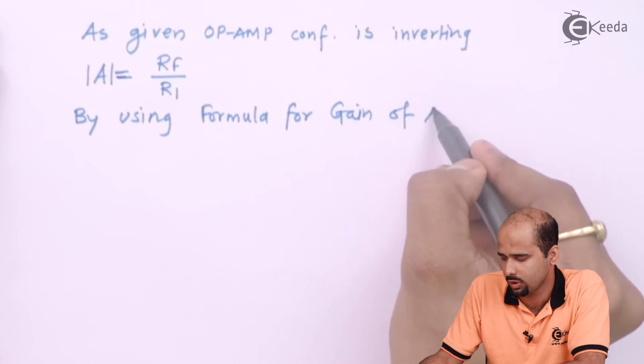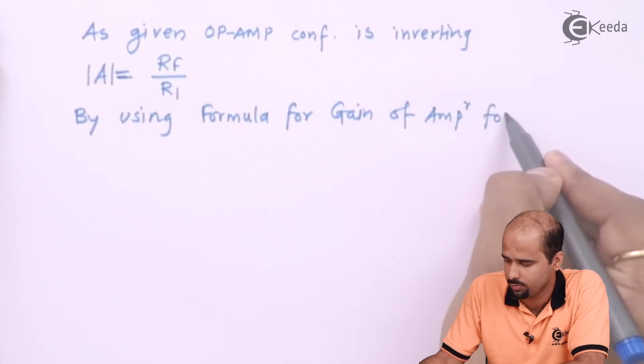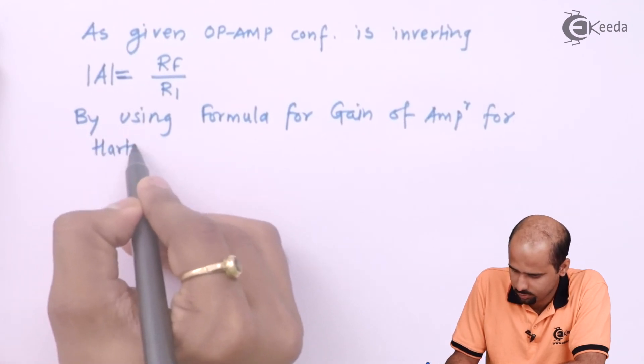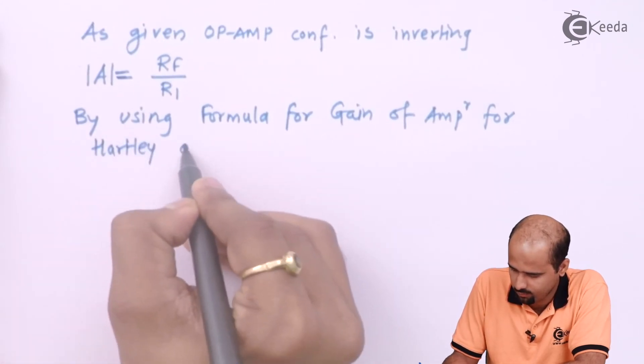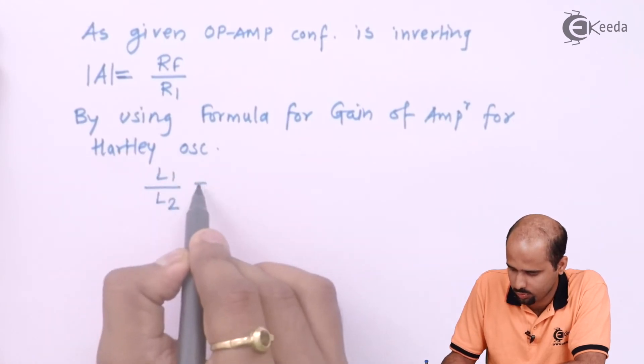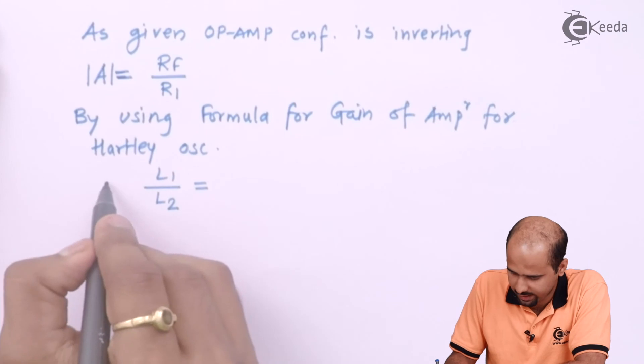amplifier for Hartley oscillator is L1 divided by L2, right? So that gain,